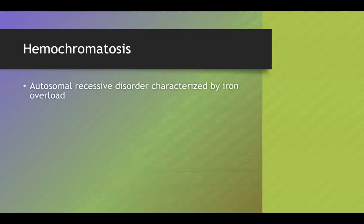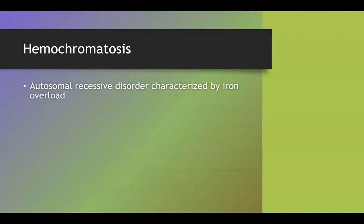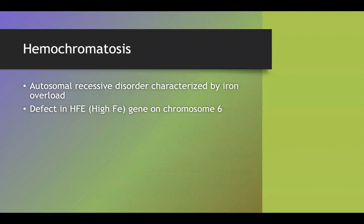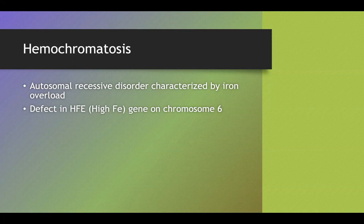Hemochromatosis is an autosomal recessive disorder characterized by iron overload. It's caused by a defect in the HFE gene, which stands for high iron gene, on chromosome 6.